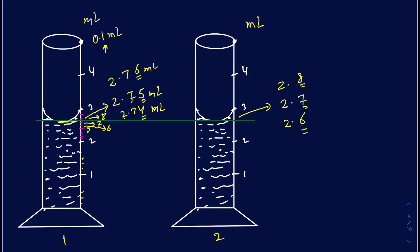If your reading is 2.5 milliliters with the less precise instrument, the 5 being an estimate means someone could say it's 2.9 or 2.1 — that's a big difference. But if someone used the first cylinder and got 2.57 milliliters, the 7 is your estimation, so the range is only 2.58 or 2.51 — changing those estimated digits doesn't change the overall magnitude much. The more sig figs you have, the better you are at getting accurate values.